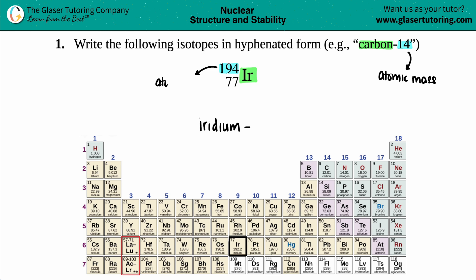And if you want to know the number on the bottom, in this case 77, that's the atomic number, the number of protons. For any element, its atomic number or the number of protons will never change. So that's why it's 77, and if you go on the periodic table, it is 77.